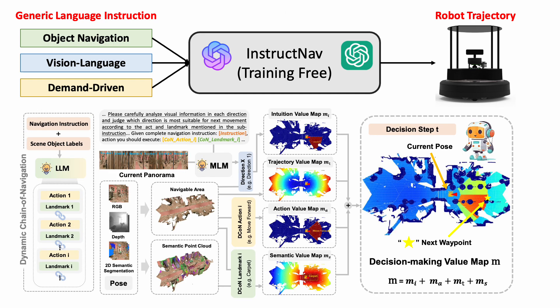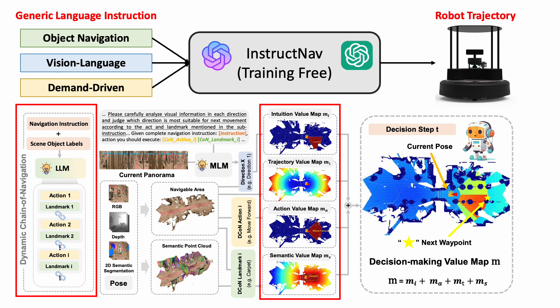Concretely, we design a dynamic chain of navigation module and multi-sourced value maps. The dynamic chain of navigation module is responsible for unifying the planning process of different navigation tasks, and it predicts a navigation action and a landmark iteratively. The multi-sourced value maps translate the planning results into a cost map for every point cloud, and then an integrated cost map can be used for robot path planning.